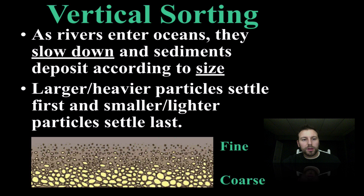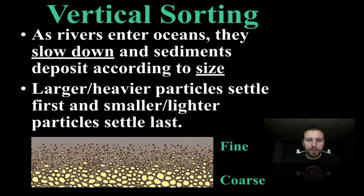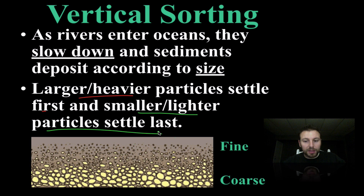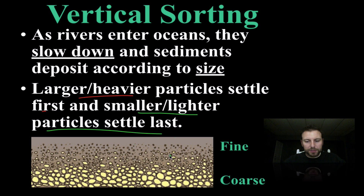We also have vertical sorting. As a river slows down, sediments are deposited according to size — very similar to horizontal sorting. The larger and heavier particles settle first, and the lighter and smaller particles settle last. This creates a vertical orientation from bottom to top: coarse on the bottom, fine on top.